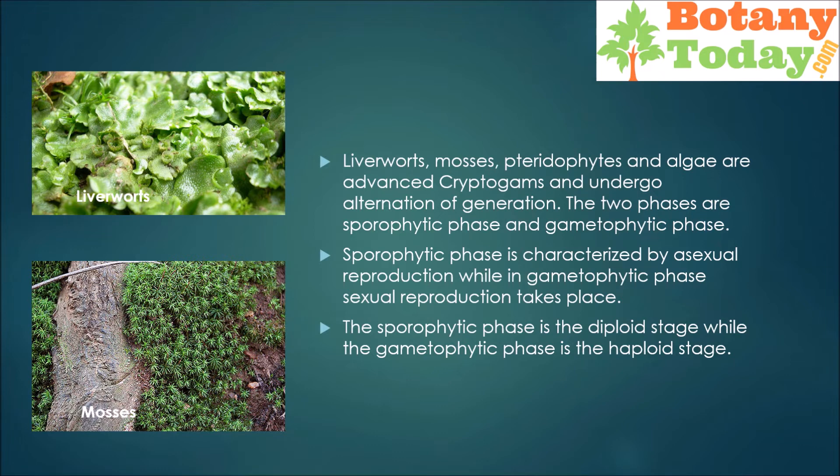The sporophytic phase is the diploid stage, while the gametophytic phase is the haploid stage. The two phases occur in alternation, one after the other.